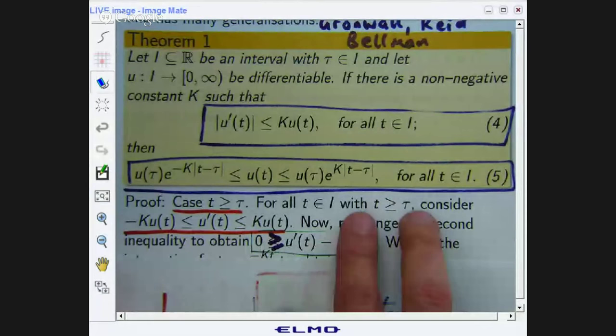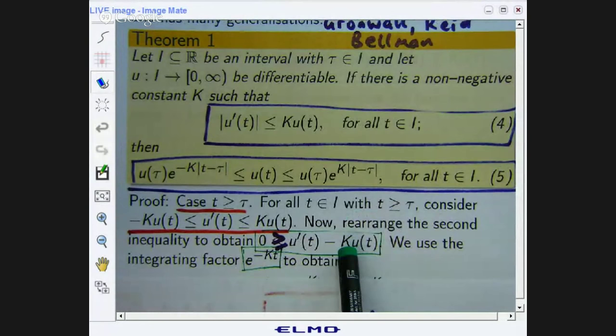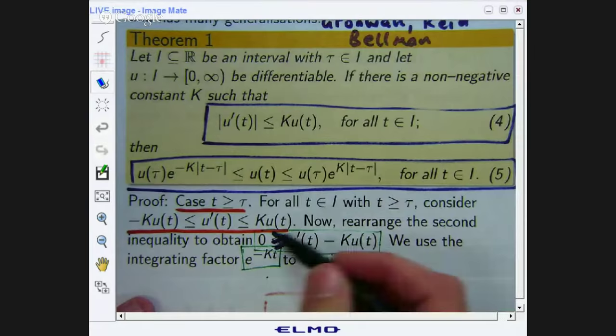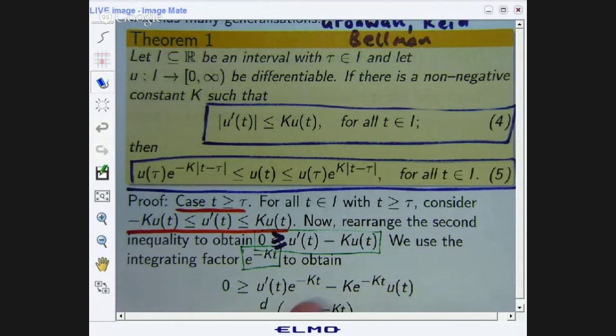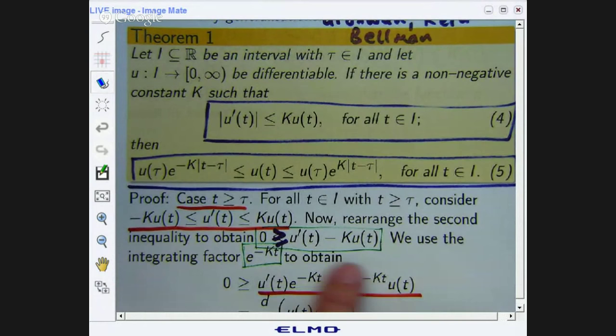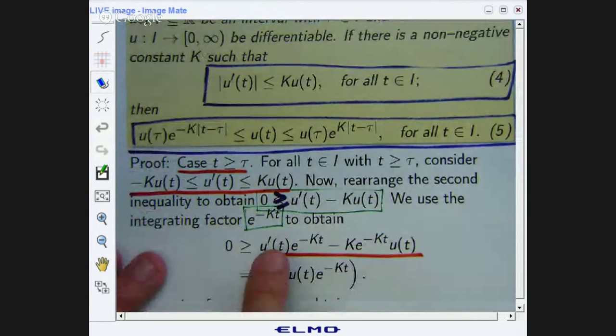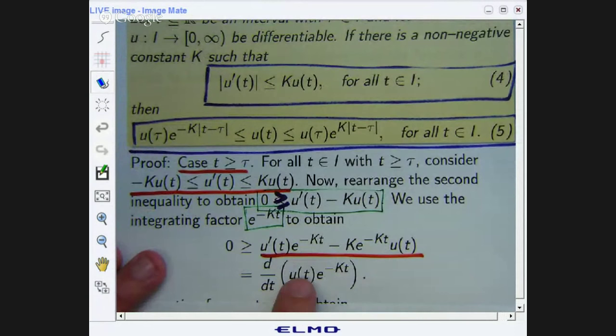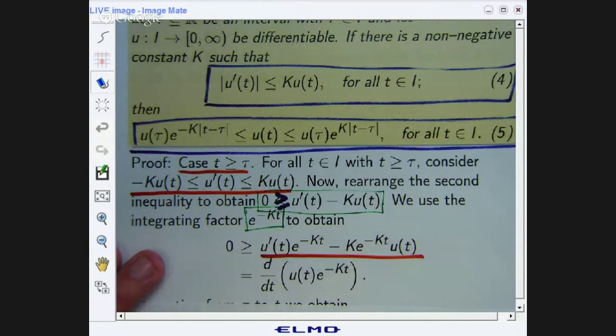So I've got this inequality here. I can form an integrating factor. So I look at the coefficient of u and I form e to the integral of the coefficient, so e^(Kt). And I multiply both sides of the inequality by e^(-Kt). So I do that and I realize that now this has become this. Now I realize that this is a special product. It's the derivative of the product of u and e^(-Kt). If you use the product rule and expand this, you'll get that. So this is very similar to how we solve first order ODEs.